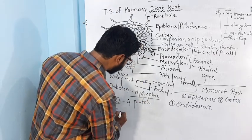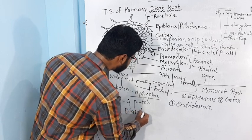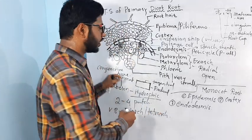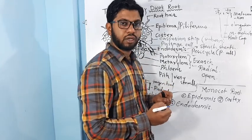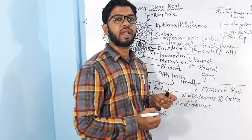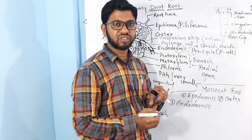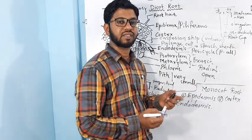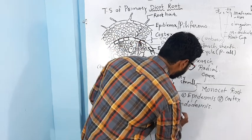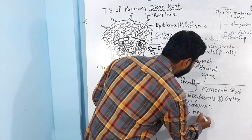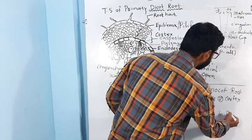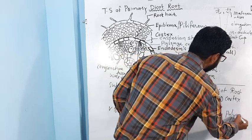In monocot root, vascular bundles are found in many patches. Vascular bundles are generally found in 6 patches or more than 6. In monocot, vascular bundles may be minimum 6, that is hexarch, or more than 6, that is polyarch.